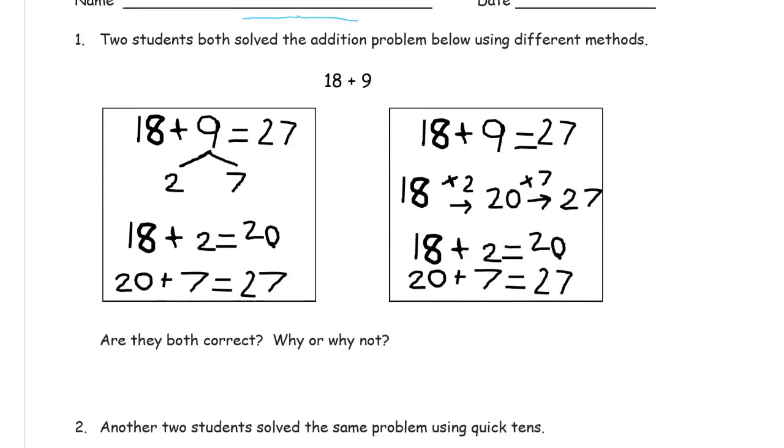Two students solved the addition problem below using different methods. Are they both correct and why or why not? You can see that they both had the same total. Let's look at what they did because the why or why not is kind of the hard part. They both did this different ways didn't they?